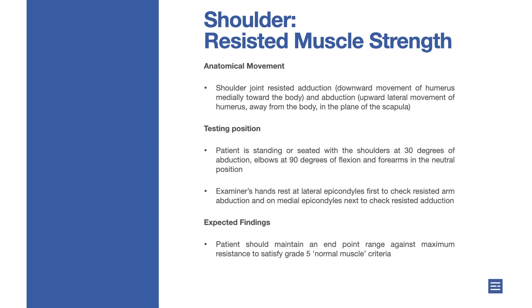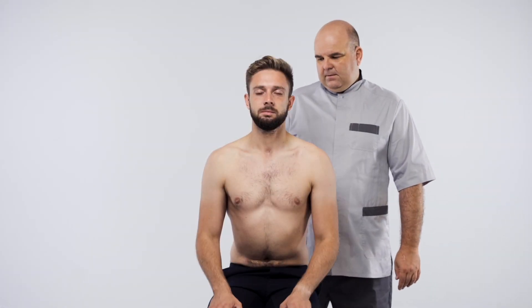Testing position: patient is standing or seated with the shoulders at 30 degrees of abduction, elbows at 90 degrees of flexion, and forearms in the neutral position. Examiner's hands rest at the lateral epicondyles first to check resisted arm abduction, and at the medial epicondyles next to check resisted adduction.